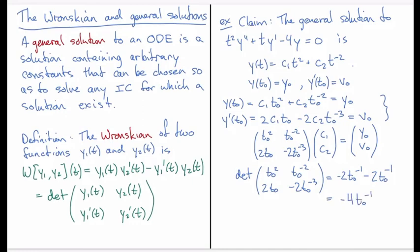What we see is that the Wronskian, which this is the Wronskian here, because you'll notice what I've got inside there is y₁(t₀), y₂(t₀), y₁'(t₀), and y₂'(t₀). And we found that the Wronskian is equal to -4t₀⁻¹. Now that is definitely non-zero.